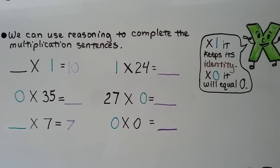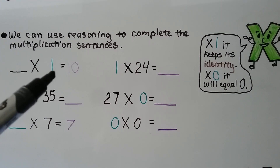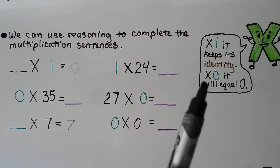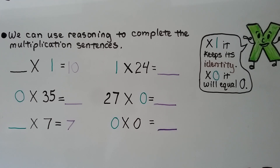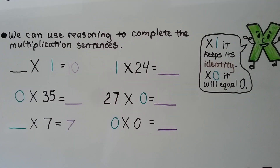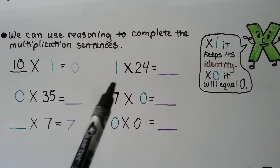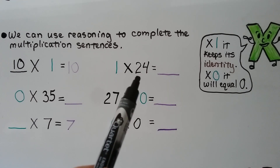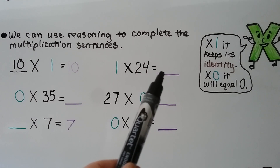We can use reasoning to complete the multiplication sentences. Something times 1 is equal to 10. Remember, when we multiply by 1, it keeps its identity, so that missing factor must be 10. The identity property says if we multiply a factor by 1, that factor will keep its identity. 1 times 24 — since 24 is being multiplied by 1, it's going to keep its identity and the answer is 24.